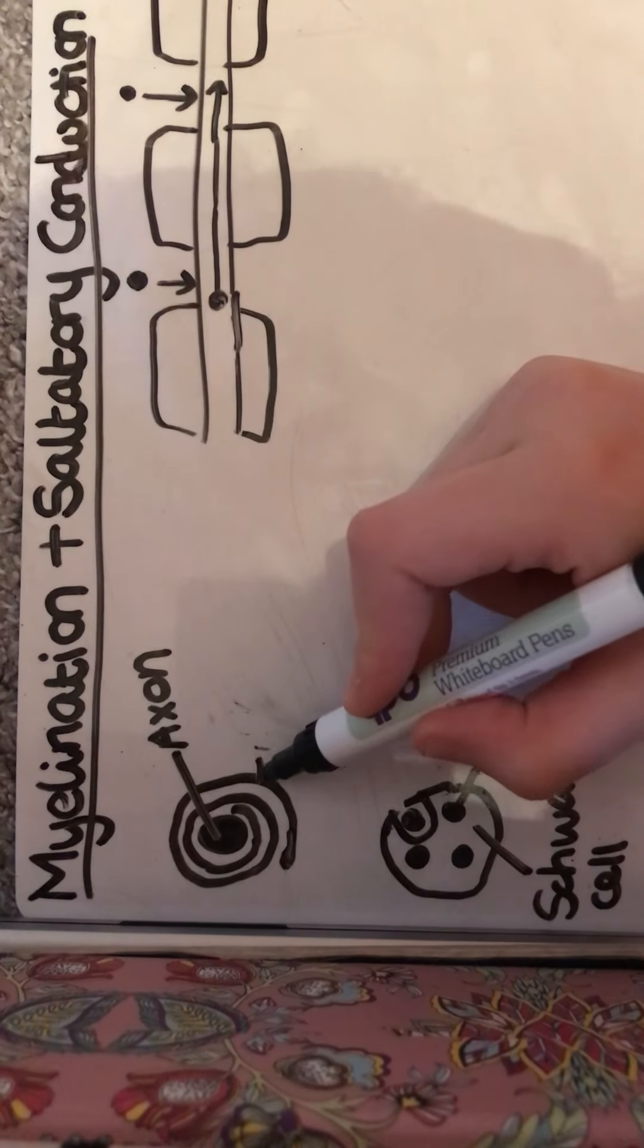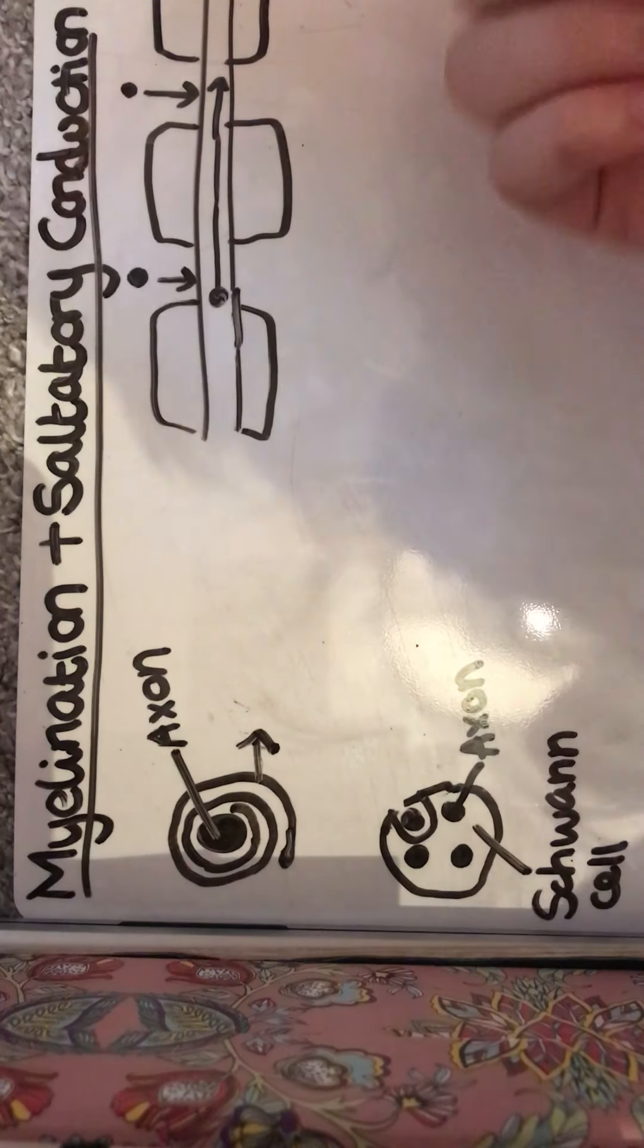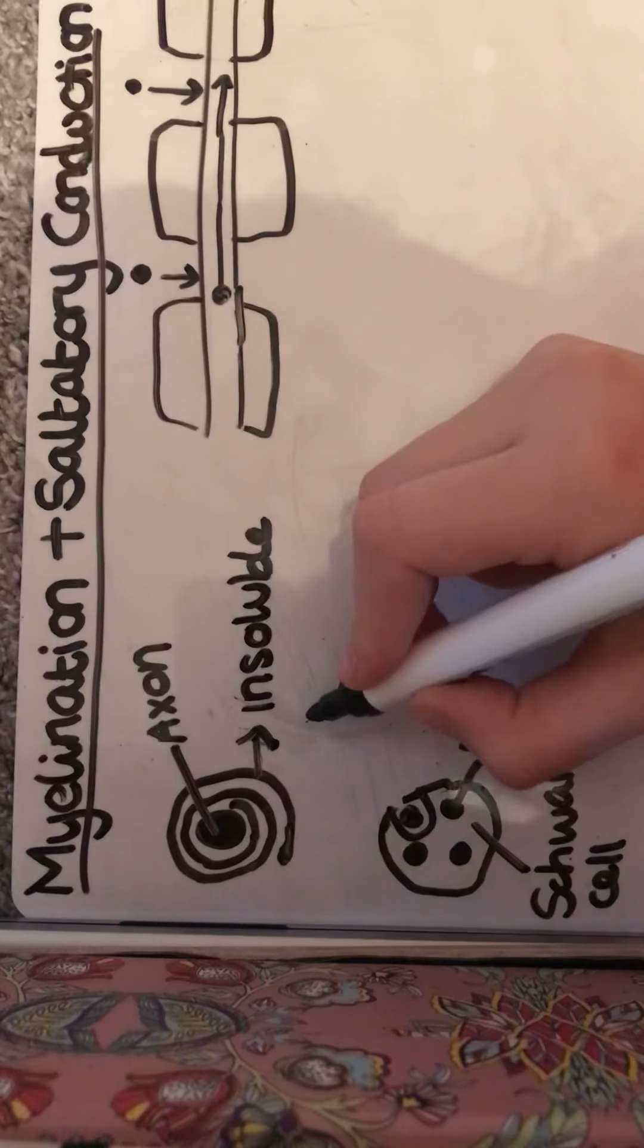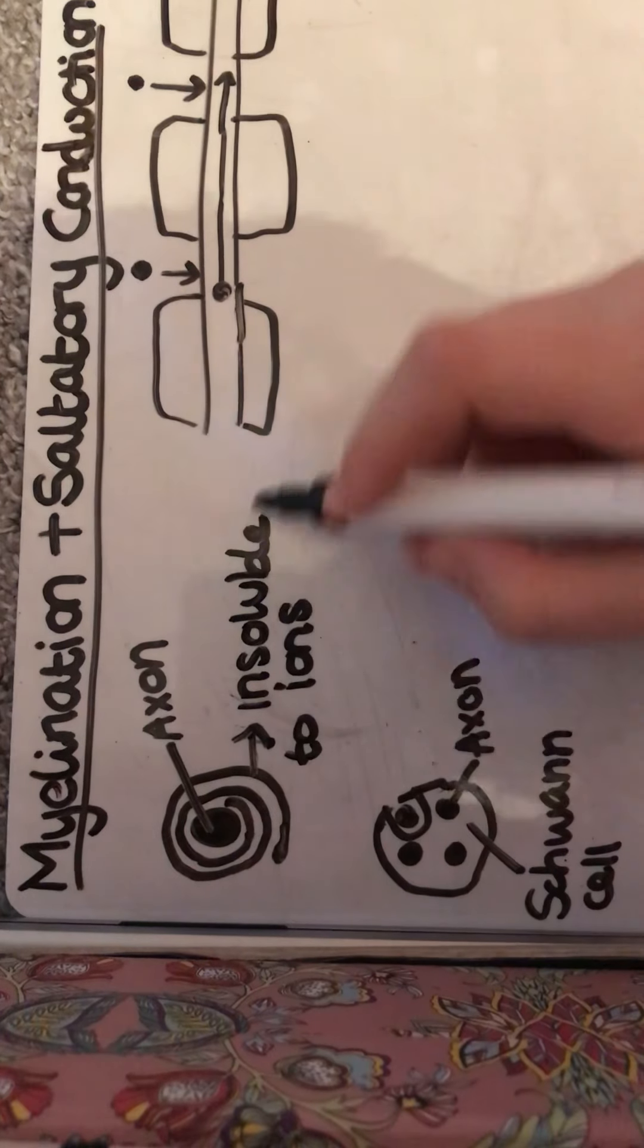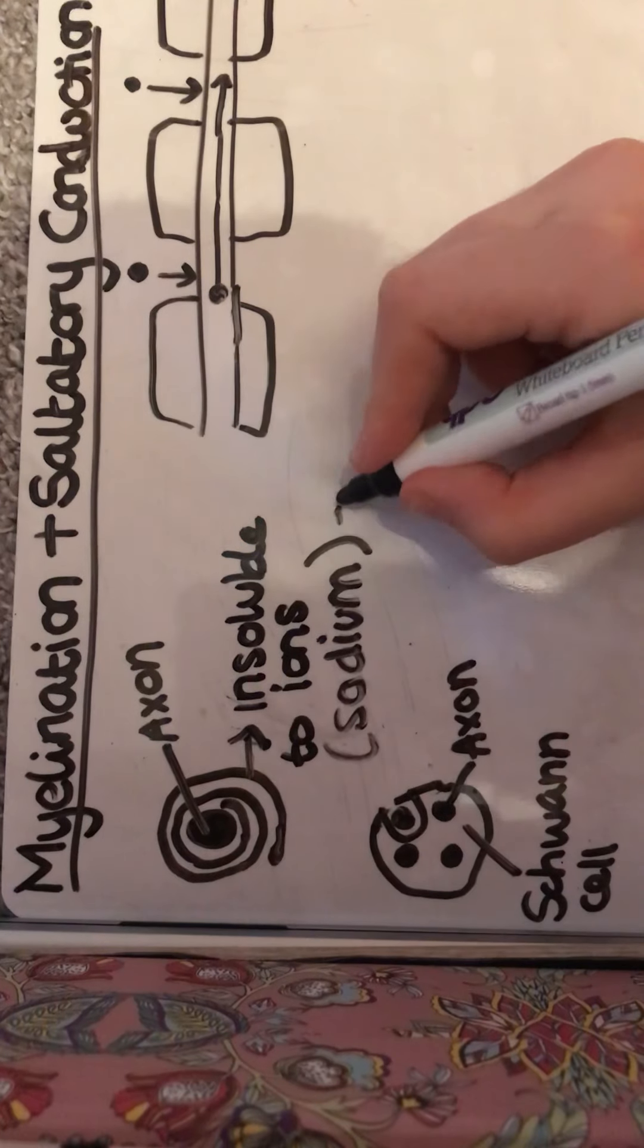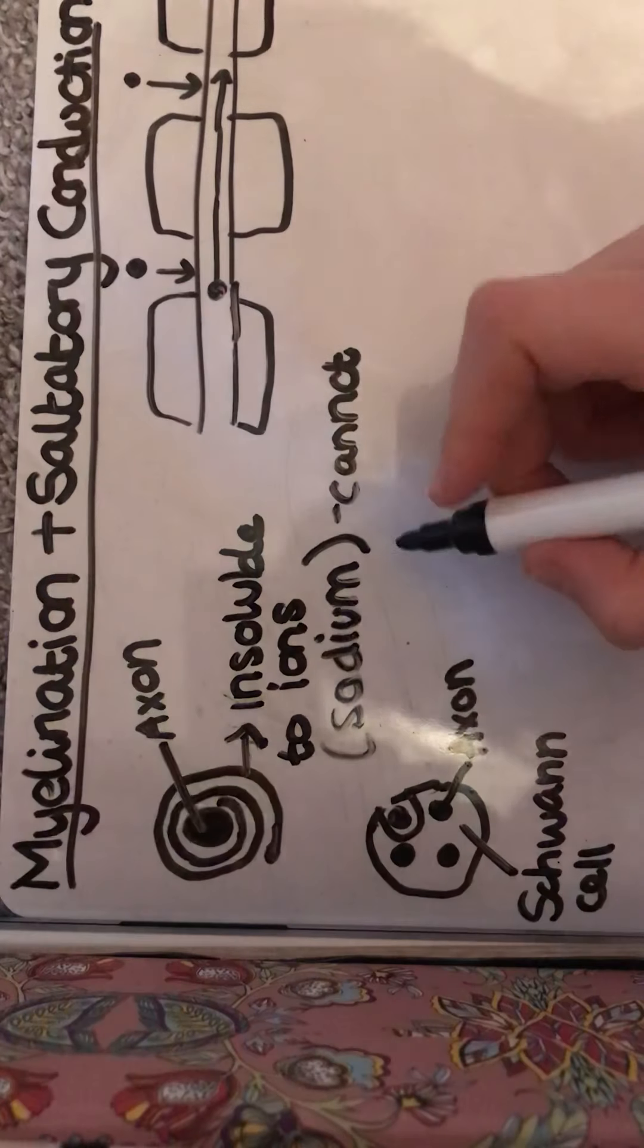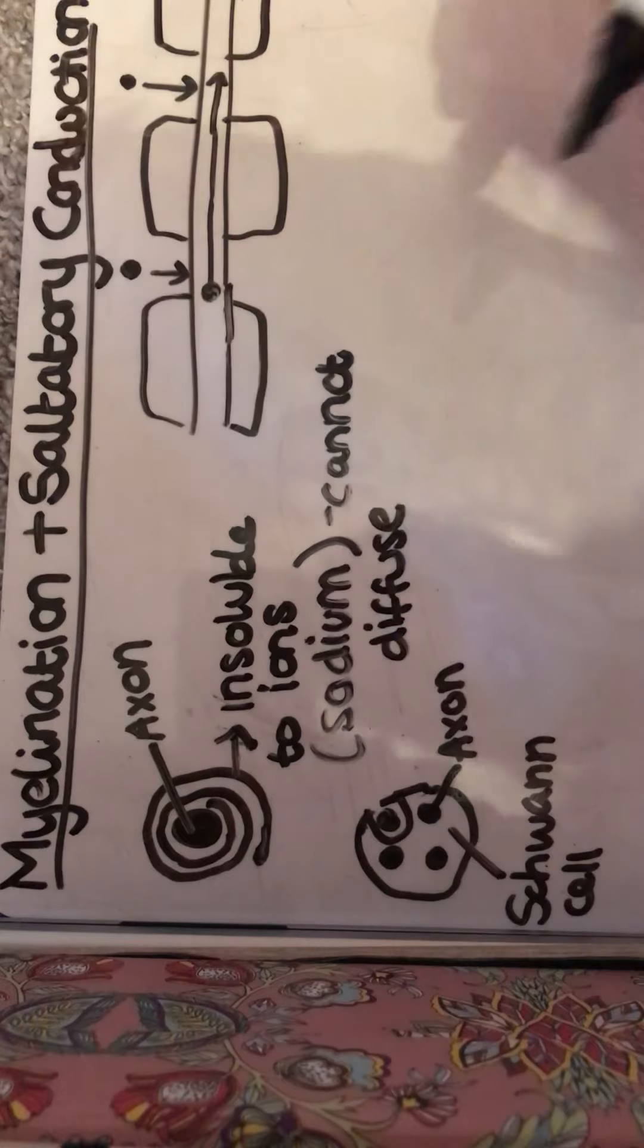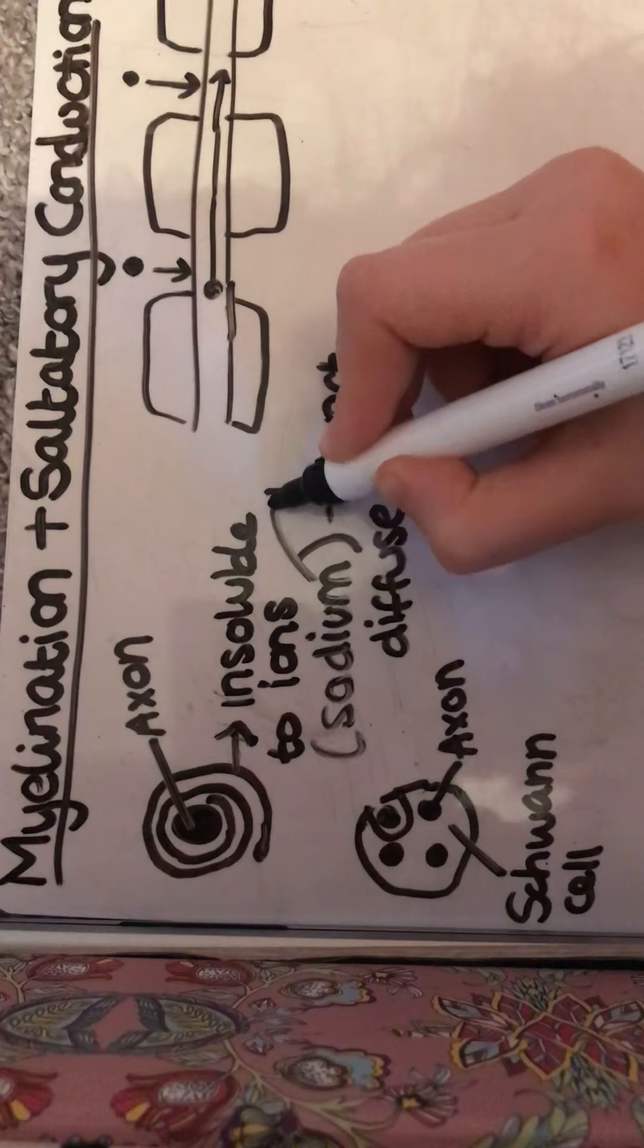So because this myelin sheath is insoluble, it is impermeable to ions, particularly sodium—sodium and potassium, sorry.